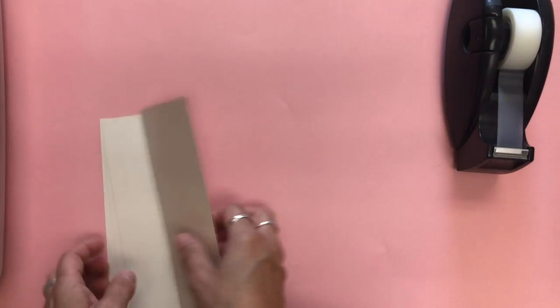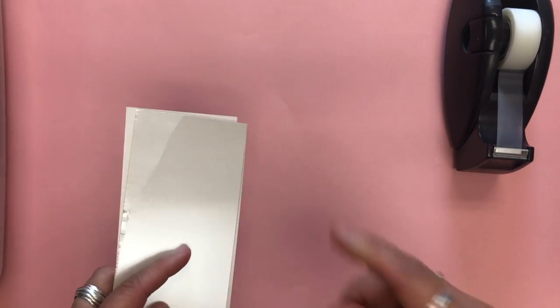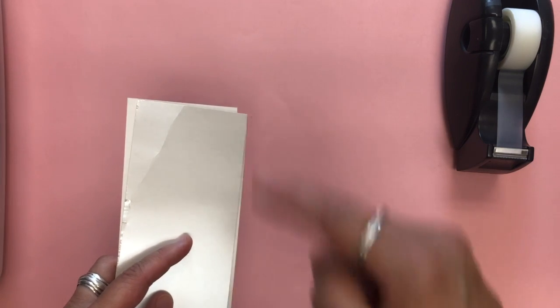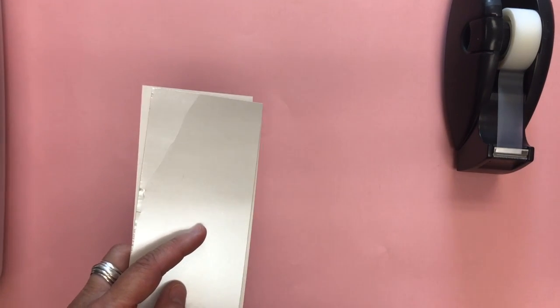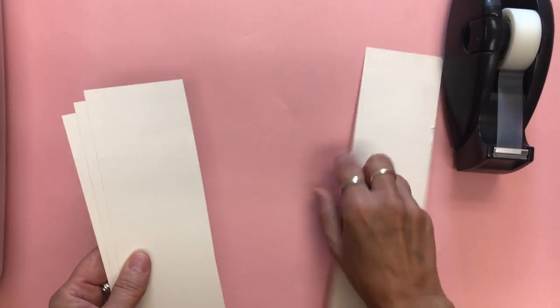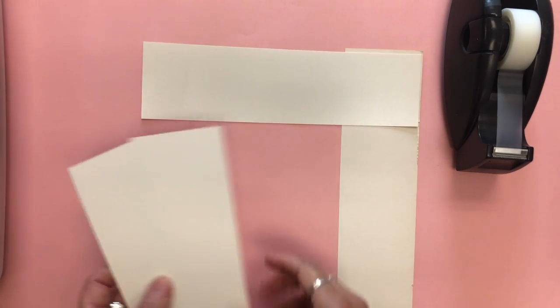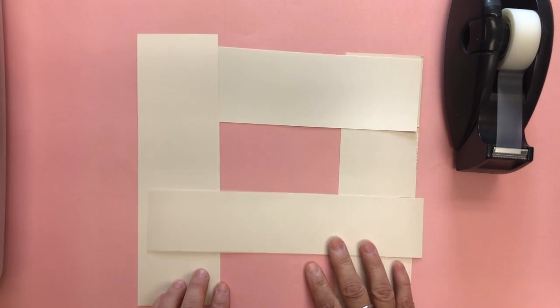So you're going to take your four strips and just line them up to make a rectangle.